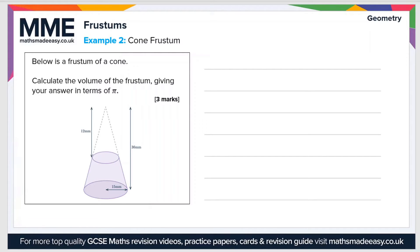Let's have a look at a second example. Below is a frustum of a cone — calculate the volume of the frustum, giving your answer in terms of π. If we look carefully, we can see we're actually missing the radius for the top section, the cone that's been removed. But we can work it out knowing that the two shapes are similar — the cone that's been removed is mathematically similar to the original cone. The height of the original cone is 36 millimeters and the height of the small cone is 12 millimeters, so the scale factor is 36 divided by 12, which equals 3.